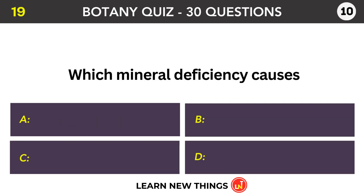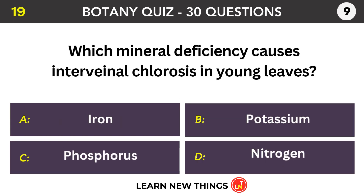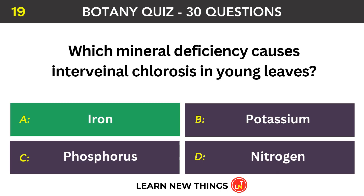Which mineral deficiency causes interveinal chlorosis in young leaves? Iron.